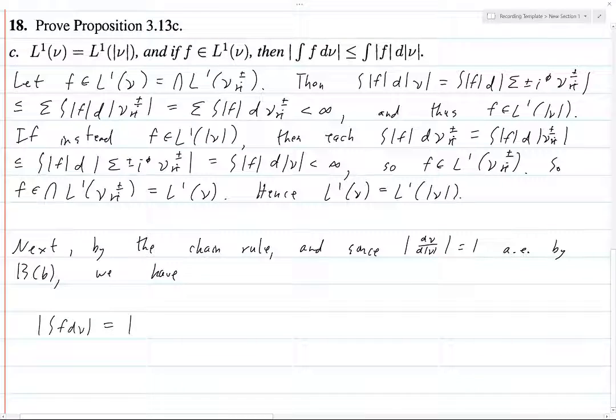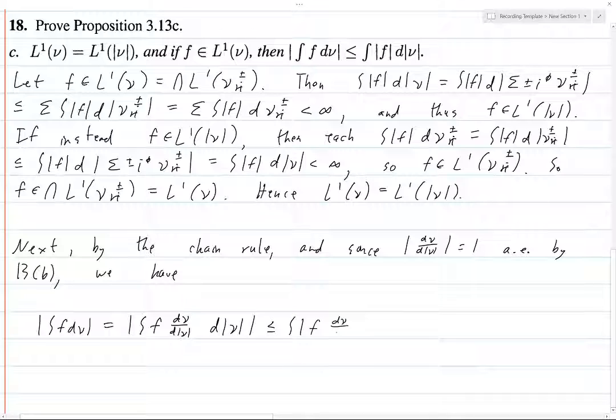And now, what is this less than or equal to? This is less than or equal to, because this is a positive measure, we can bring the absolute values inside like we're used to doing. And this is d|ν|. But this is a product of two absolute values, so we can just break it up like this. But because this part is equal to 1 everywhere, we can just replace it with 1. This is integral of |F| d|ν|. And that's the inequality we wanted. And so this completes the proof.